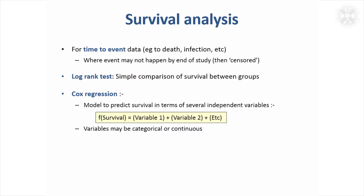There are various types of model, but one that's used quite a lot is known as Cox regression, named after a statistician called Cox. That allows you to apply a function to the survival — the probability of survival — and put the data into a modelling framework so you can fit various effects in the model, just like we've done before with logistic regression and general linear models.